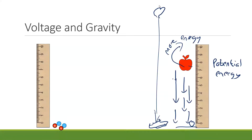Where does the energy come from? The energy comes from me lifting the apple up. I give it energy by pushing against the gravitational field — gravity wants to pull it down, I'm working against gravity, and that energy goes into the apple.